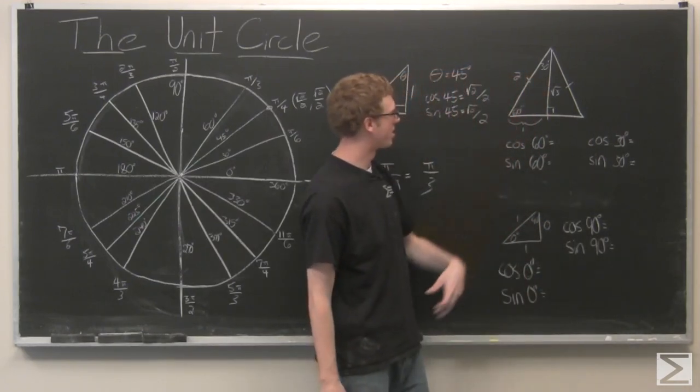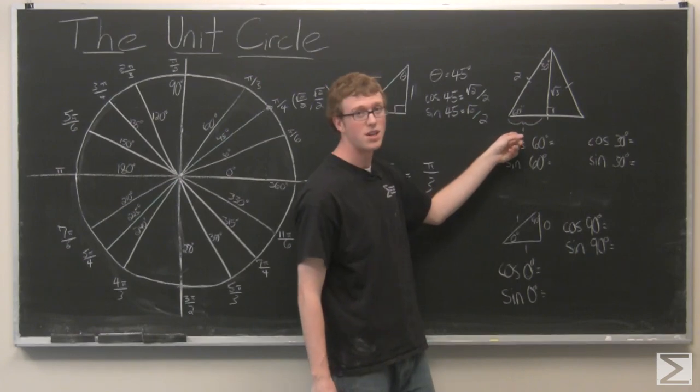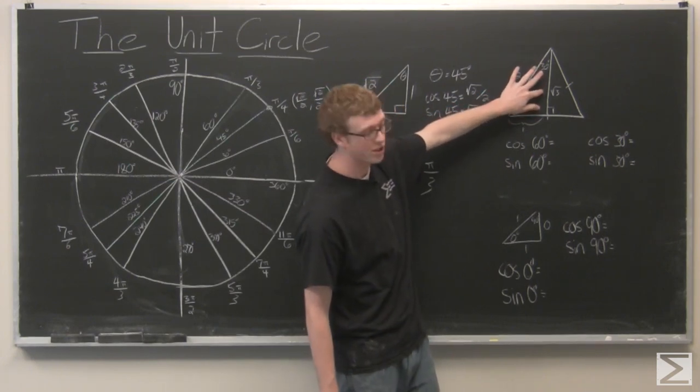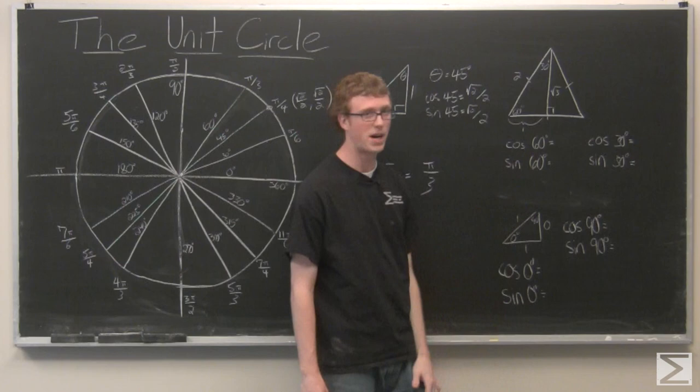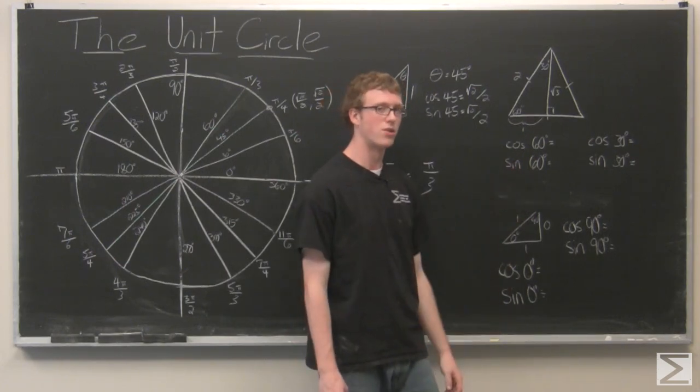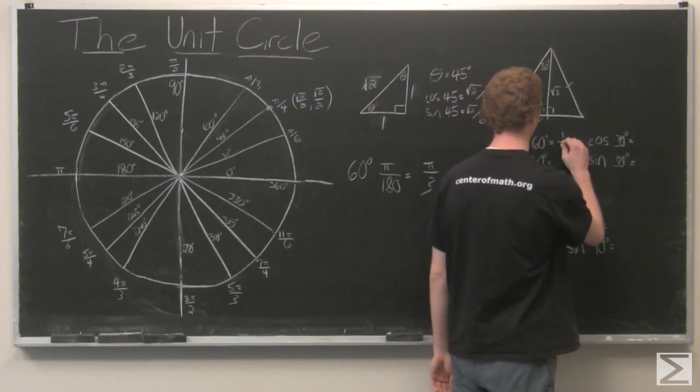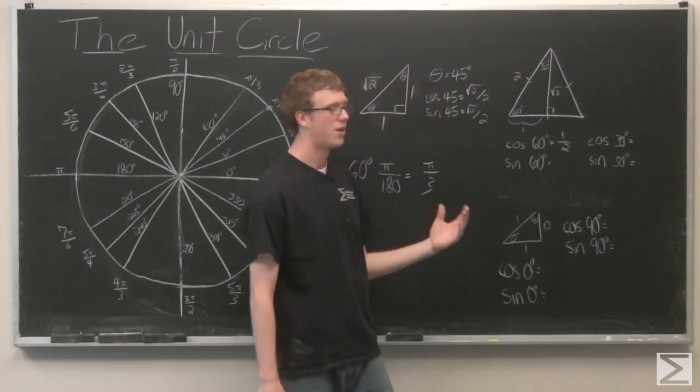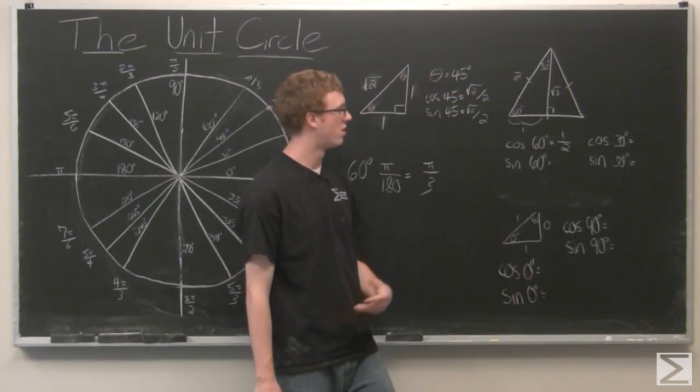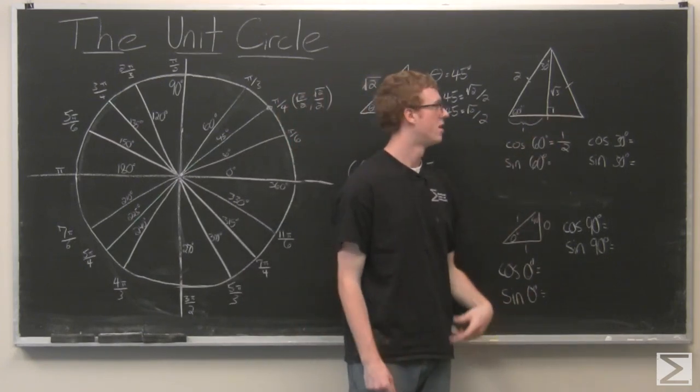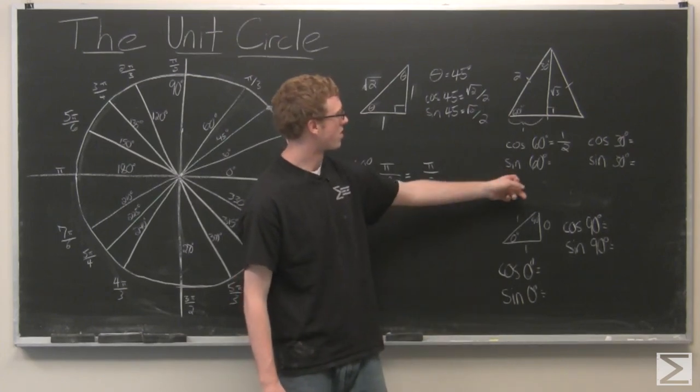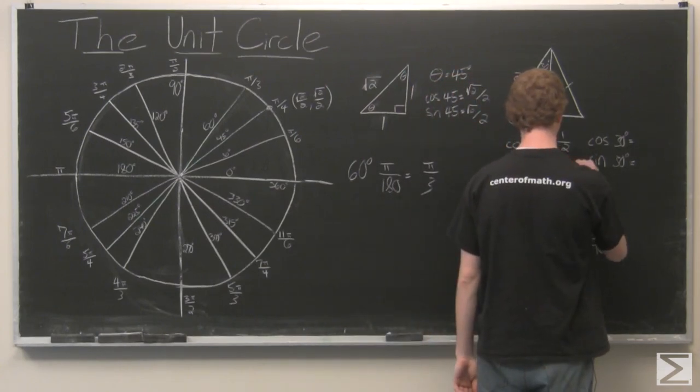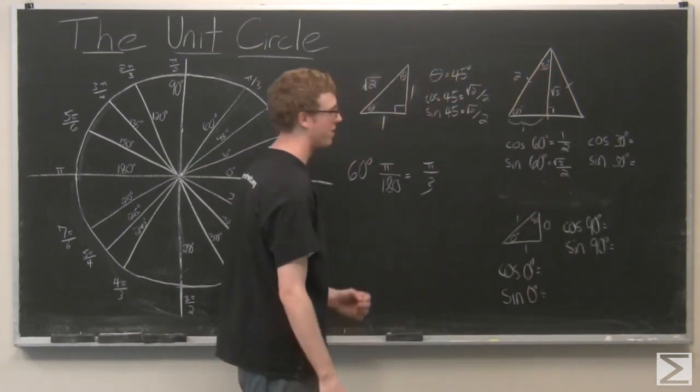So we're going to have theta equals 60 degrees first. Cosine of theta is adjacent over hypotenuse. We know that the altitude that cuts that angle up there in half is also going to bisect that segment. So we have cosine of 60 degrees is just one half. Now we could use these two values 1 and 2. We have 2 squared is 4 minus 1 squared, 4 minus 1 which is 3 and then square root of 3. So sine of 60 degrees opposite over hypotenuse is just root 3 over 2. So I'm going to go ahead and put these points into our circle.